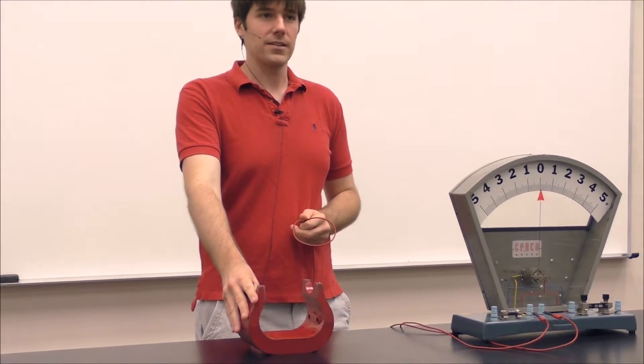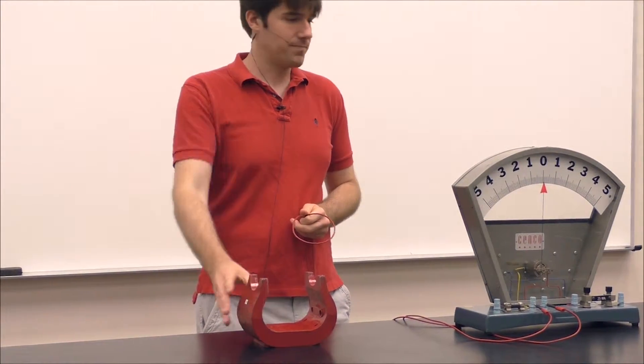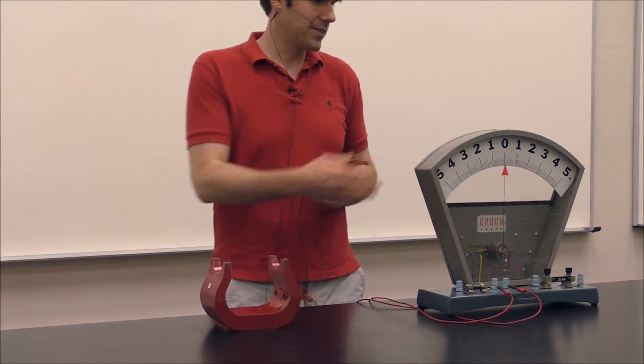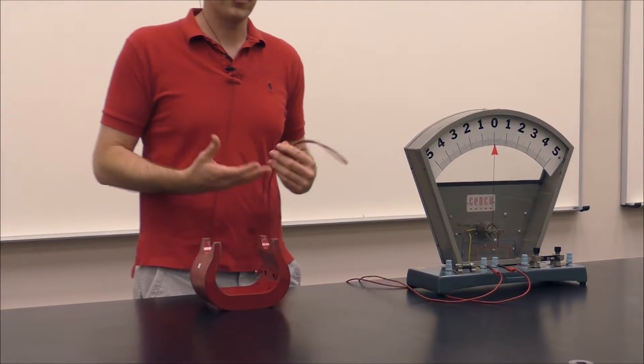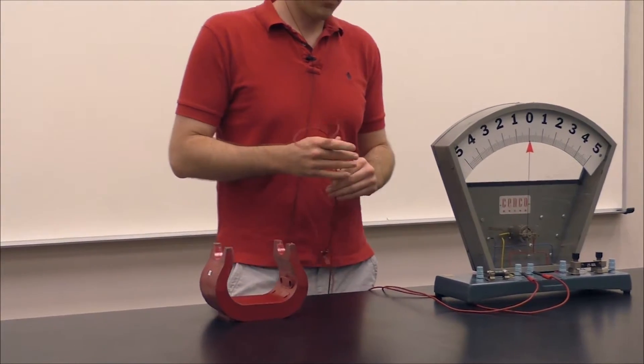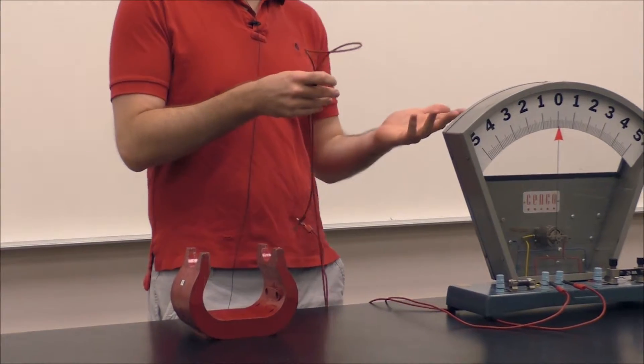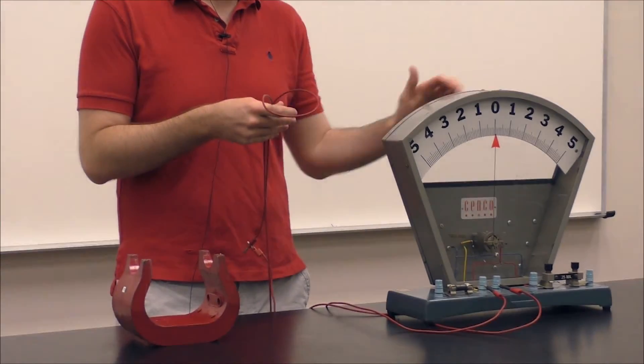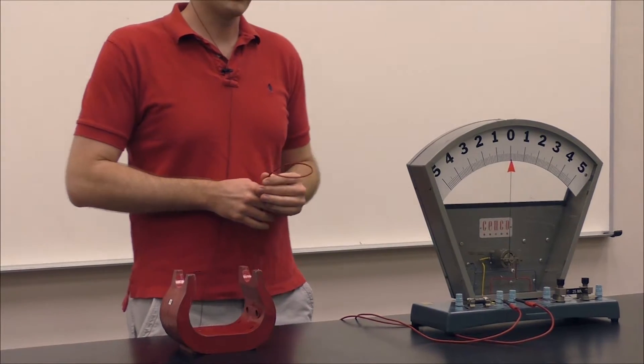We have a bar magnet and a set of wire that's connected to a galvanometer, which measures the current. Right now, when they're connected, since there's no power supply, we have a zero current reading on the galvanometer.